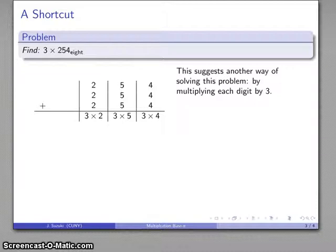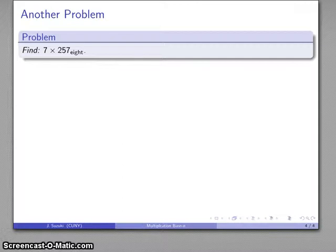I added three 4s together, that's 3 × 4. I added three 5s together and three 2s together. What this suggests is that if I want to do this product 3 × 254 base 8, I can start by taking each digit of my number and multiplying it by 3. So I get 3 × 4, 3 × 5, 3 × 2. Those will be the values, not necessarily the digits because we have to do bundling and trading, but those will be the values in each of our places.